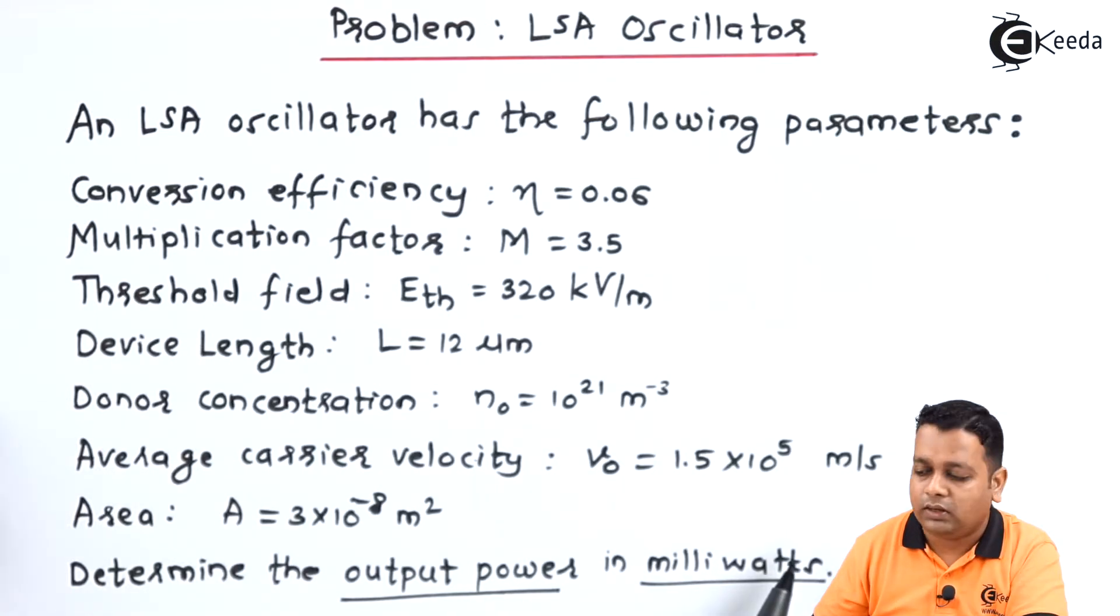So here we are provided a lot many parameters with respect to this LSA diode working as oscillator and now we can compute the output power. Let us have the output power given by the formula.